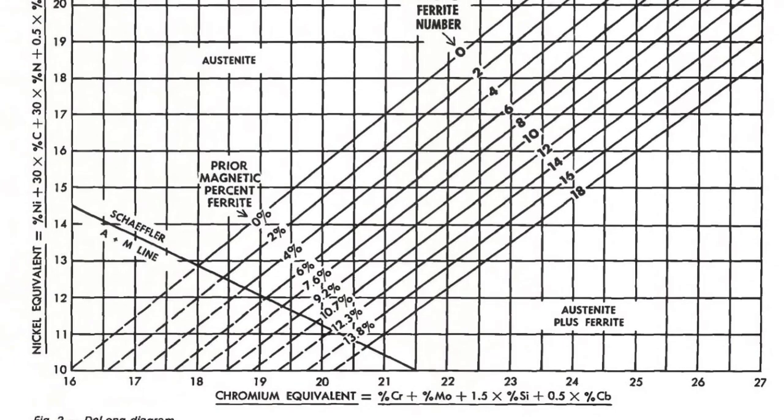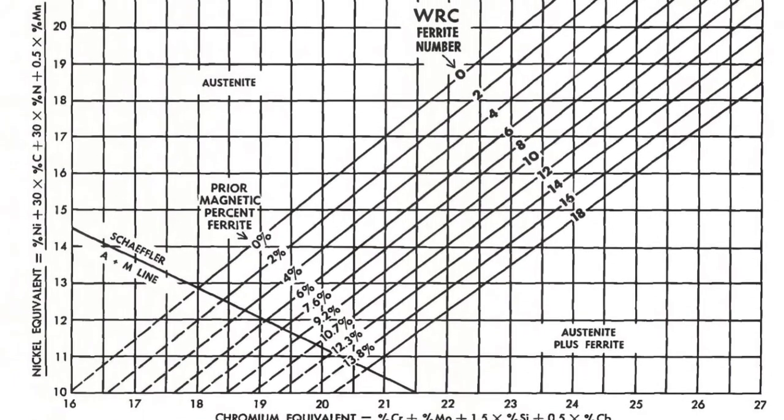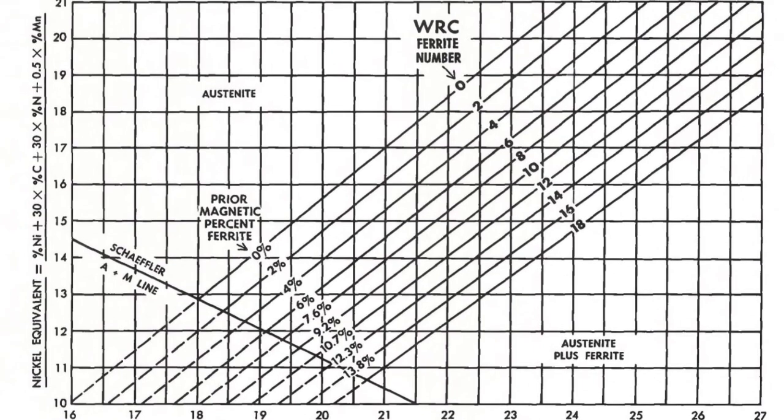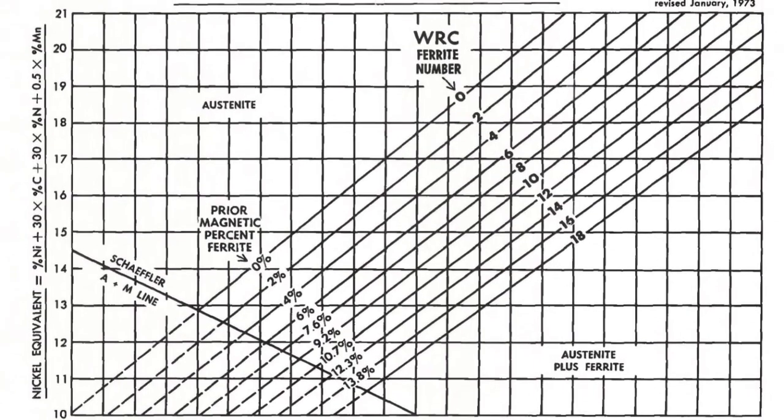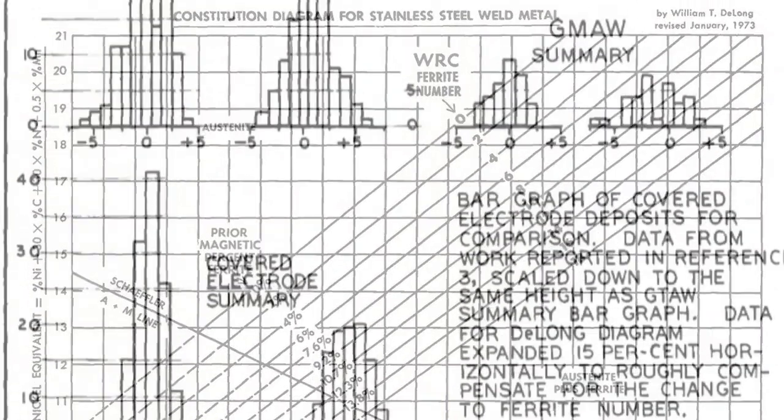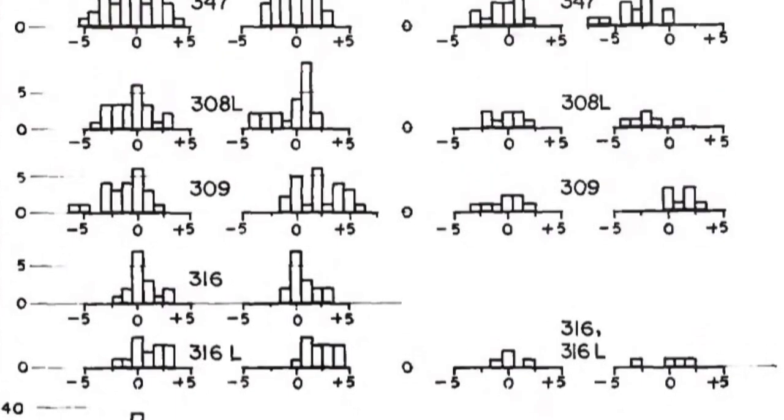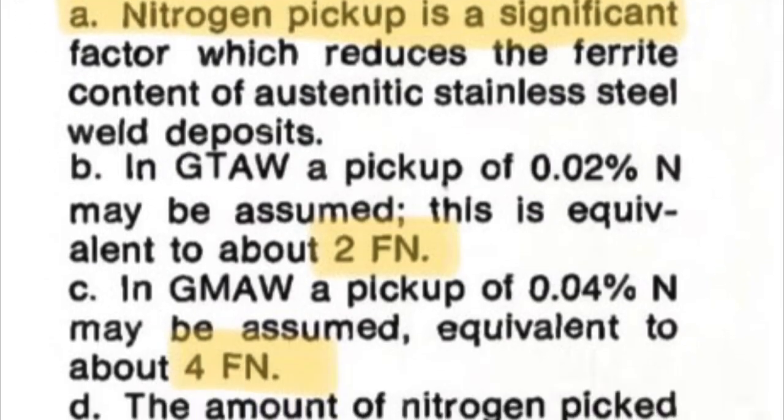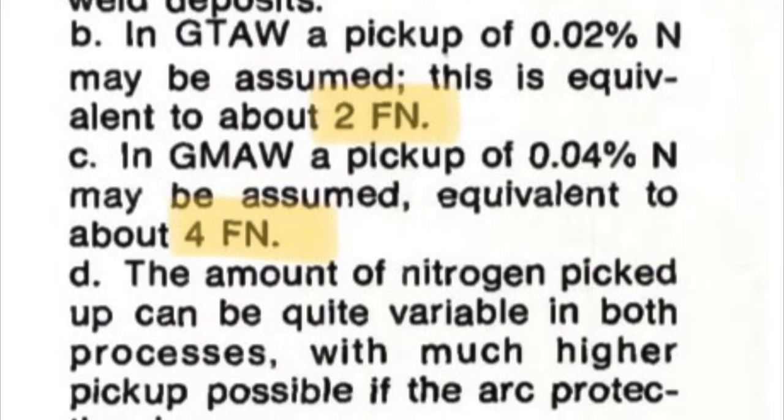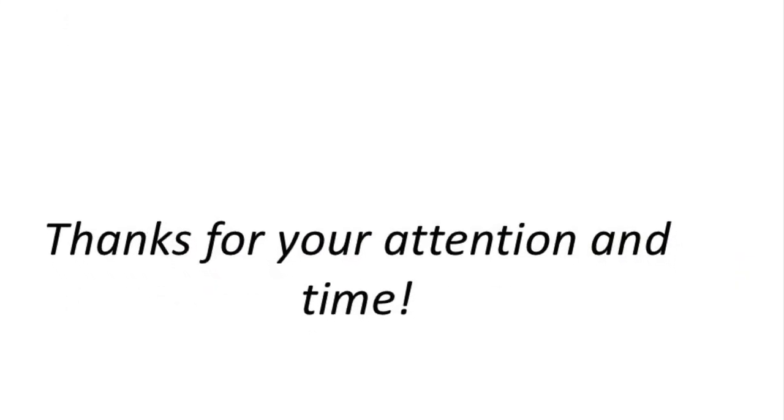This is the advancement of Schaeffler diagram that is DeLong diagram. Here in nickel equivalent, the nitrogen content, that is 30 times of nitrogen content, is added in nickel equivalent. This bar graph shows the comparison of Schaeffler and DeLong diagram based on test results conducted by American Welding Society. Thank you for your valuable time.